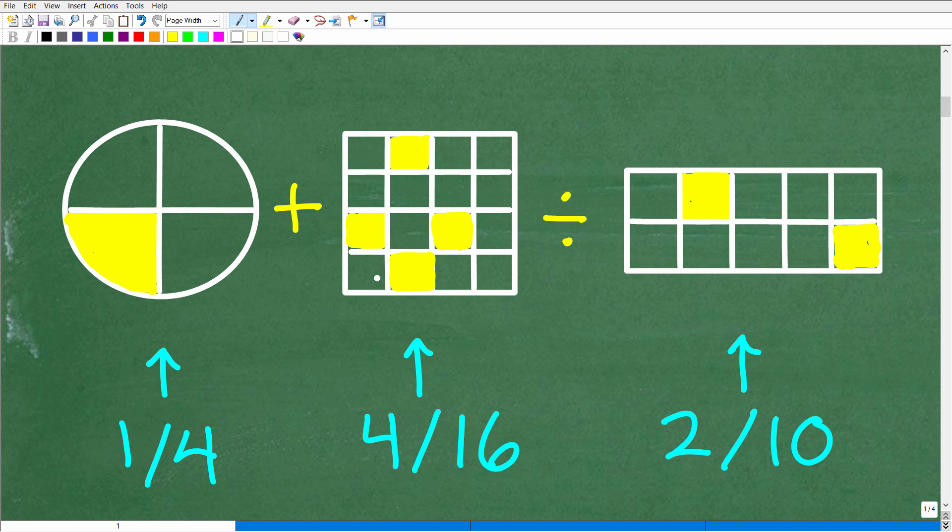And here, what do we have? Well, we have one, two, three, four shaded yellow boxes out of how many? Well, there's one, two, three, four. One, two, three, four. Four times four is 16. So, we have four out of 16 boxes shaded. All right. So, that would represent the fraction four-sixteenths.